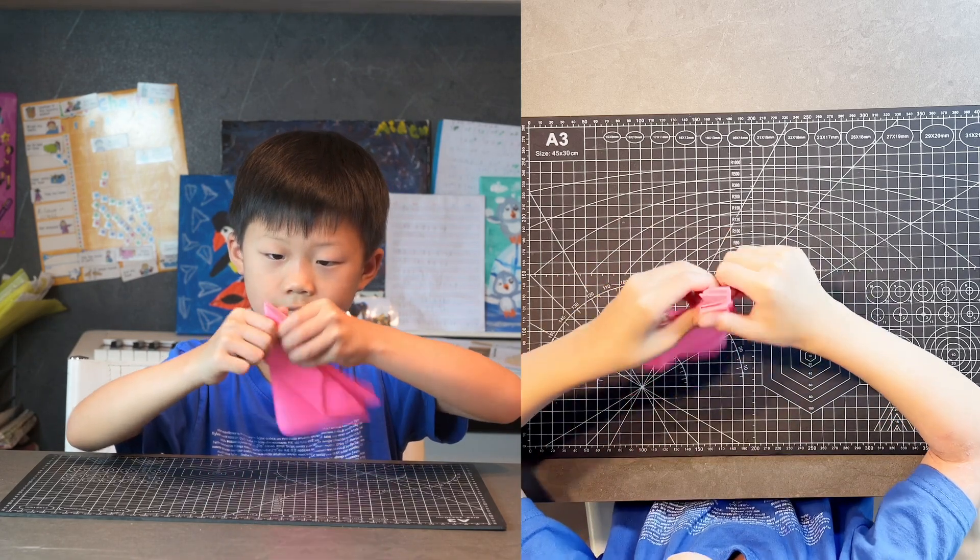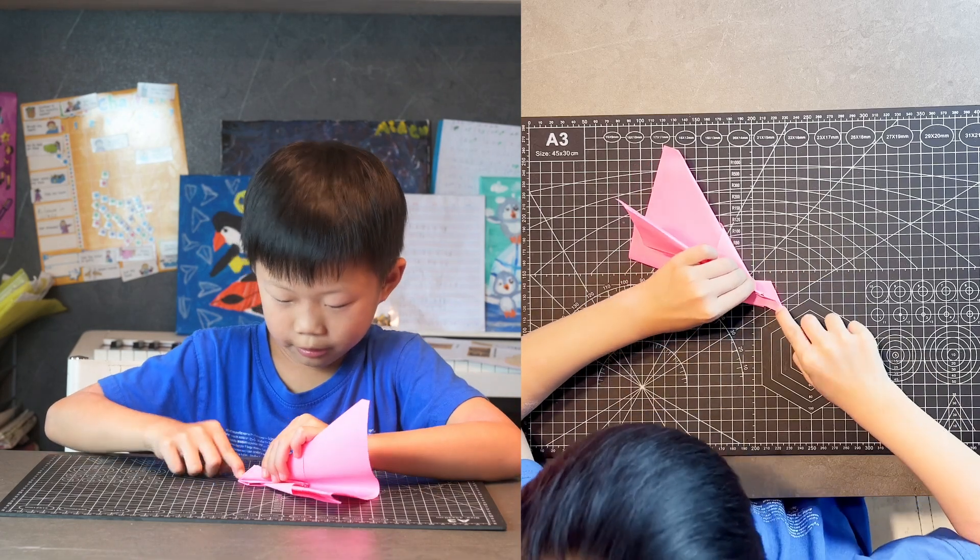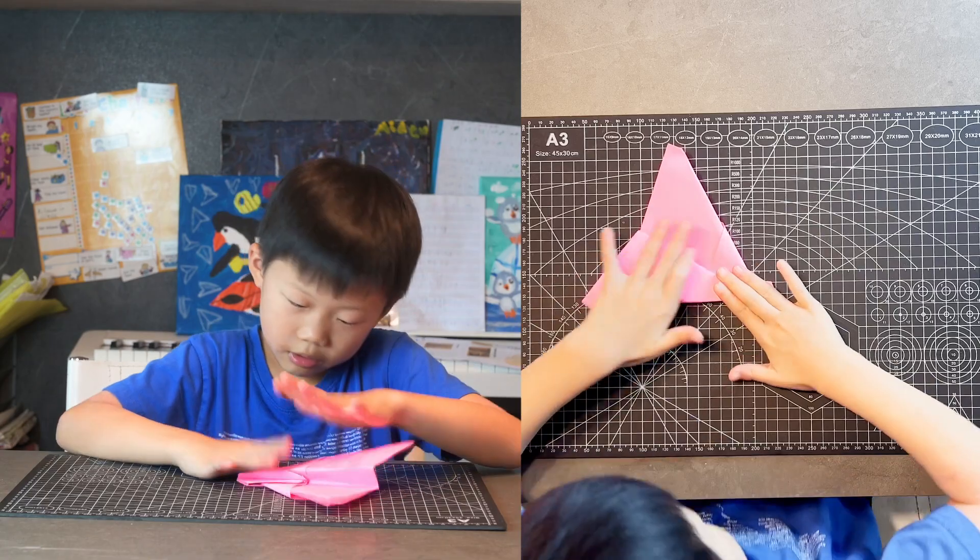And then fold it in half. And then fold the wings from this part to quite low, like this.